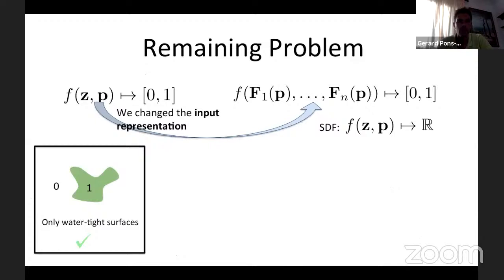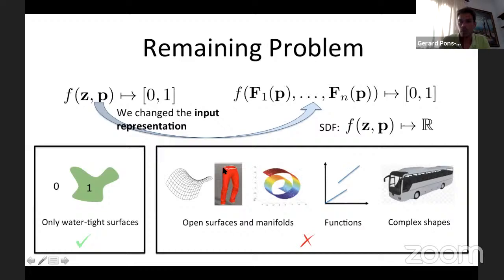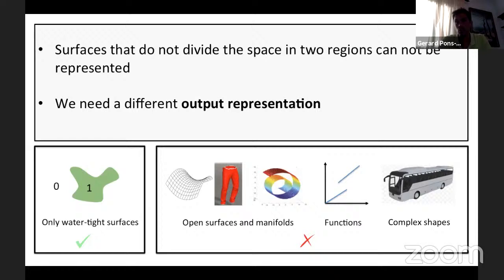We still have a problem: because we use an occupancy representation (0/1) or a signed distance field, we are limited to watertight surfaces — only closed surfaces can be modeled. But if we want to model open manifolds like garments, we cannot do that, or we need to close the surfaces which is a pain. Also, we cannot model objects with inner structures — a bus has inside chairs, making it difficult to know what is inside versus outside. Surfaces that do not divide space into two regions cannot be represented.